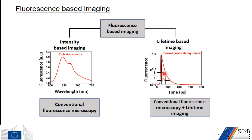In conventional fluorescence microscopy, the emission intensity of a specimen is integrated over time to create an intensity-based image of the sample. Spectral emission filters are used to separate the weaker emitted light from the much stronger illumination light. In the fluorescence lifetime imaging method, instead of recording the emission intensity, the decay of the fluorescence across the specimen is recorded and used to construct the image.